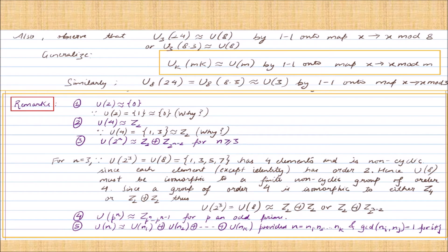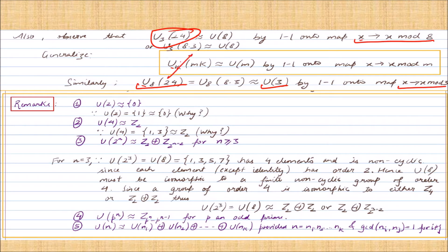Writing the subgroups of U24: U3(24) is isomorphic to U8 via a one-to-one onto map, and U8(24) is isomorphic to U3 by another one-to-one onto map. In general, U_k(mk) is isomorphic to U(m), as the k's cancel in the subscript notation.